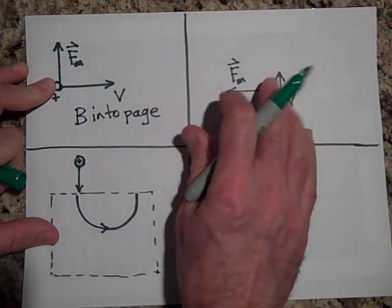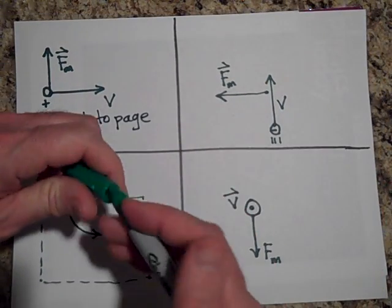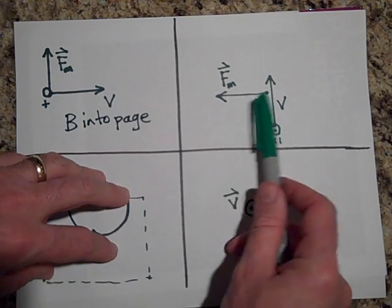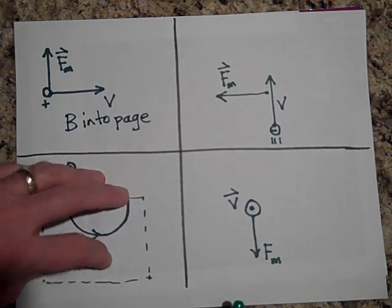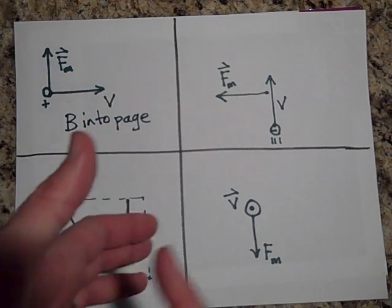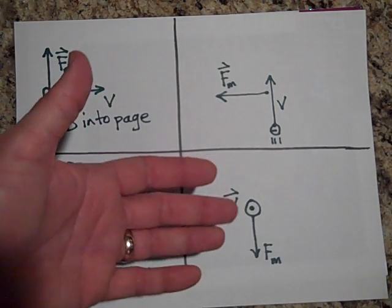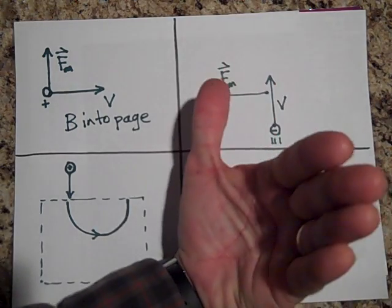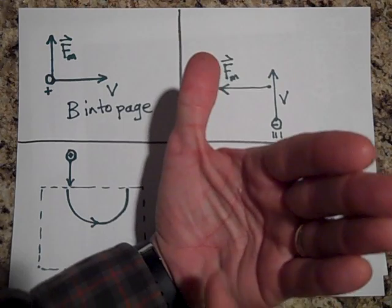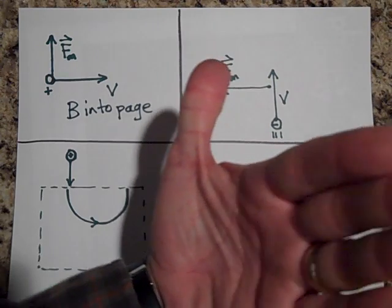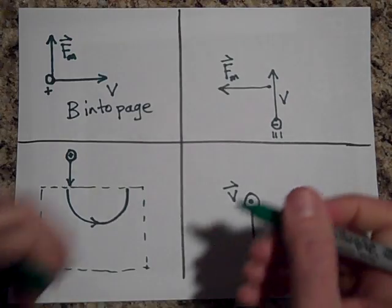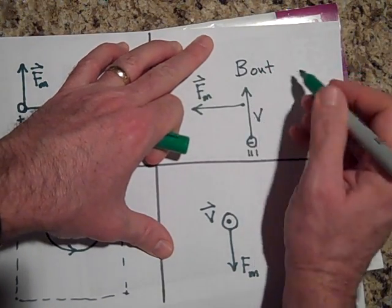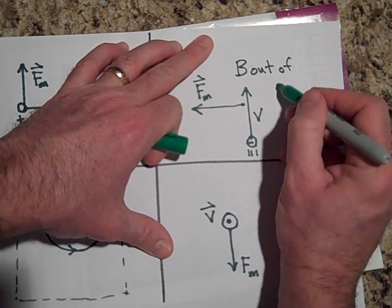Next example: a negative charge heading that way with the force to the left. For a negative charge, use your left hand. Put your thumb in the direction of v and arrange so the palm pushes to the left. The field comes out at us — out of the page — to give a force to the left.